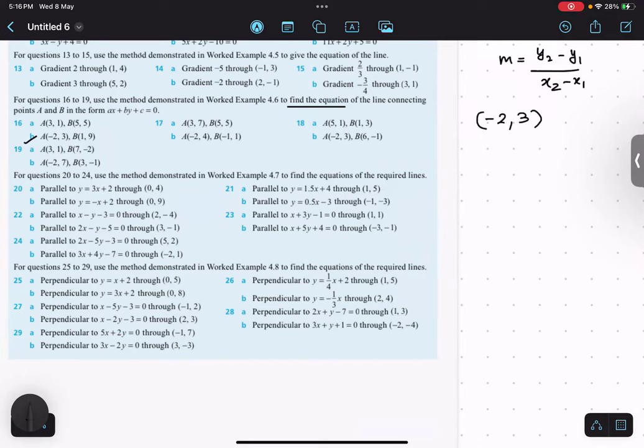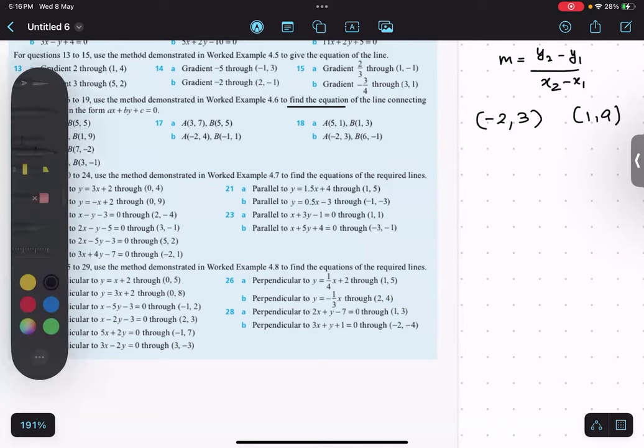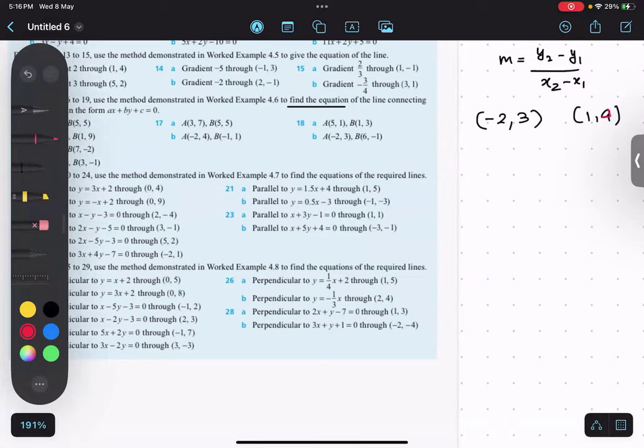And another point is (1, 9). The red ones are the y values and the blue ones are the x values. You can take any point as the first or second point, but I've written this as the second point, so I'll take this as y2. So 9 minus 3 upon